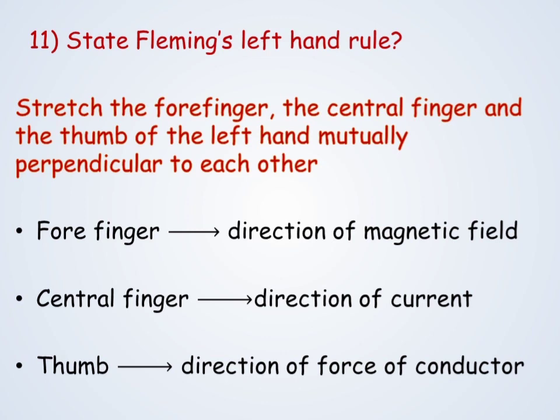State Fleming's left hand rule. Stretch the forefinger, central finger, and the thumb of the left hand mutually perpendicular to each other. The forefinger points the direction of the magnetic field, the central finger points the direction of current, whereas the thumb points the direction of force on the conductor. This is Fleming's left hand rule.